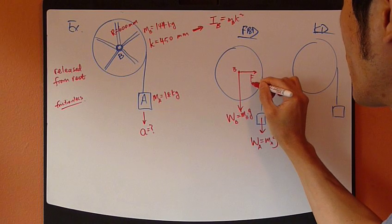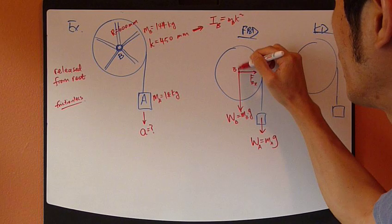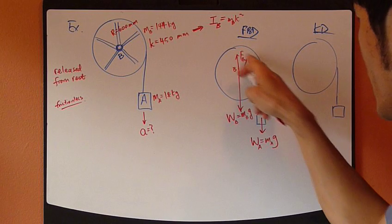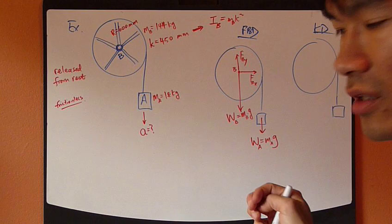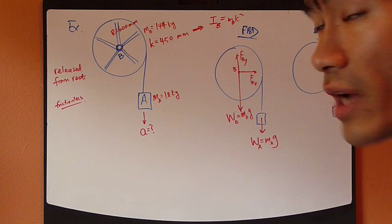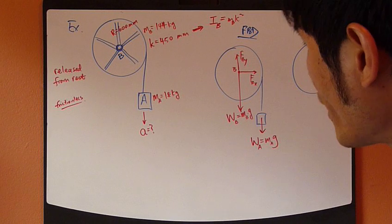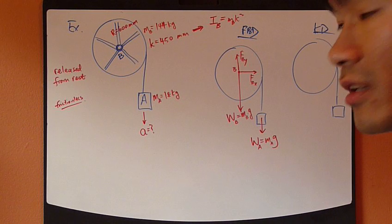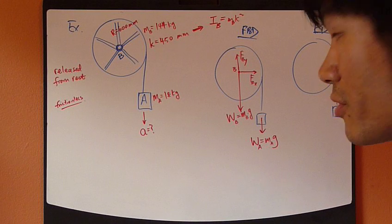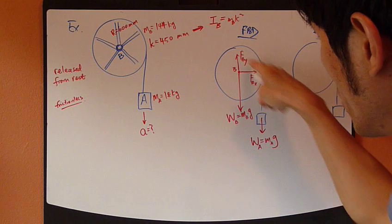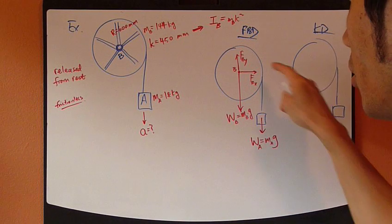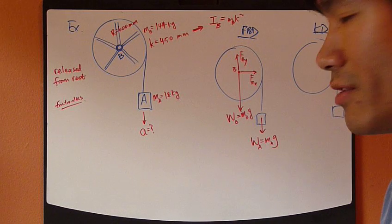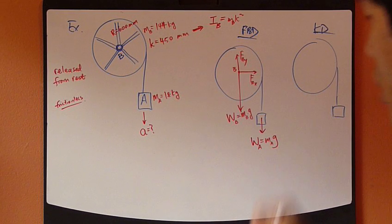I'll call the reaction forces F_Bx and F_By. The directions of these two reaction forces are arbitrary at this point because they are unknown. I'm going to assume F_Bx goes to the right and F_By goes up. If you don't know something, assume something, draw the arrows accordingly, and proceed with your calculation based on what you assumed.